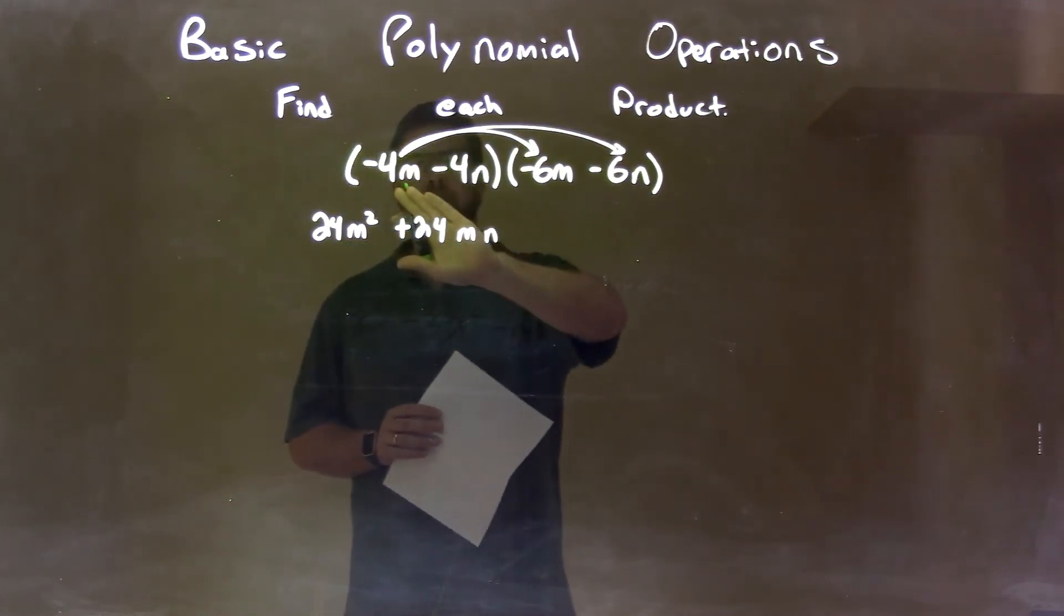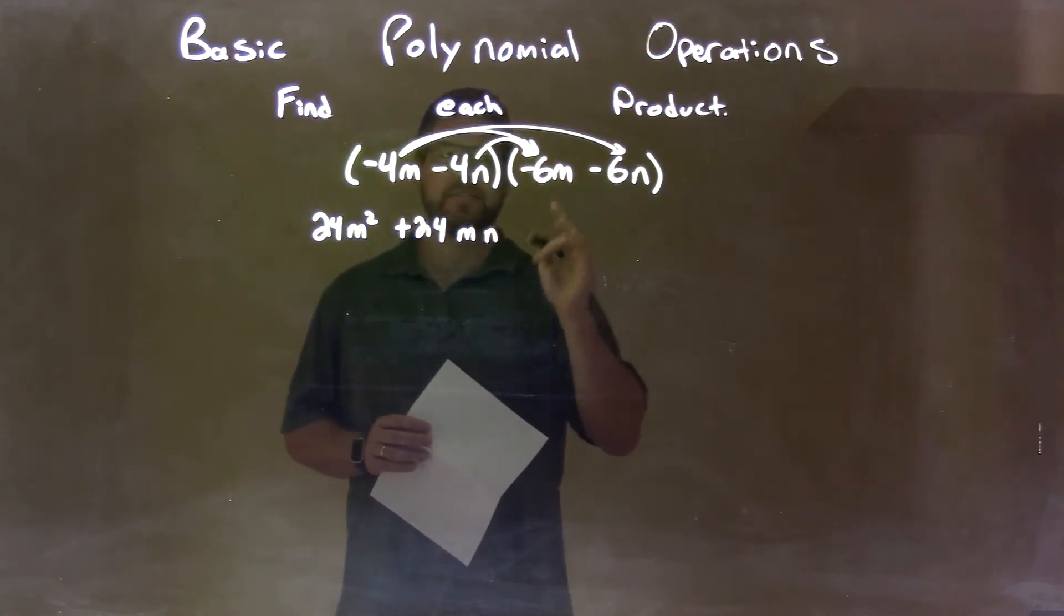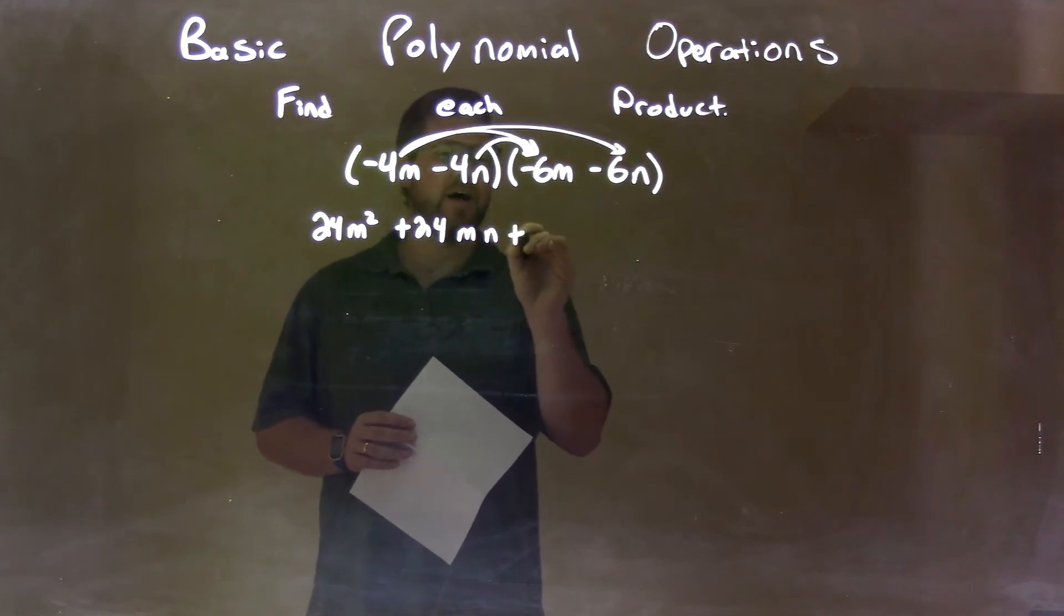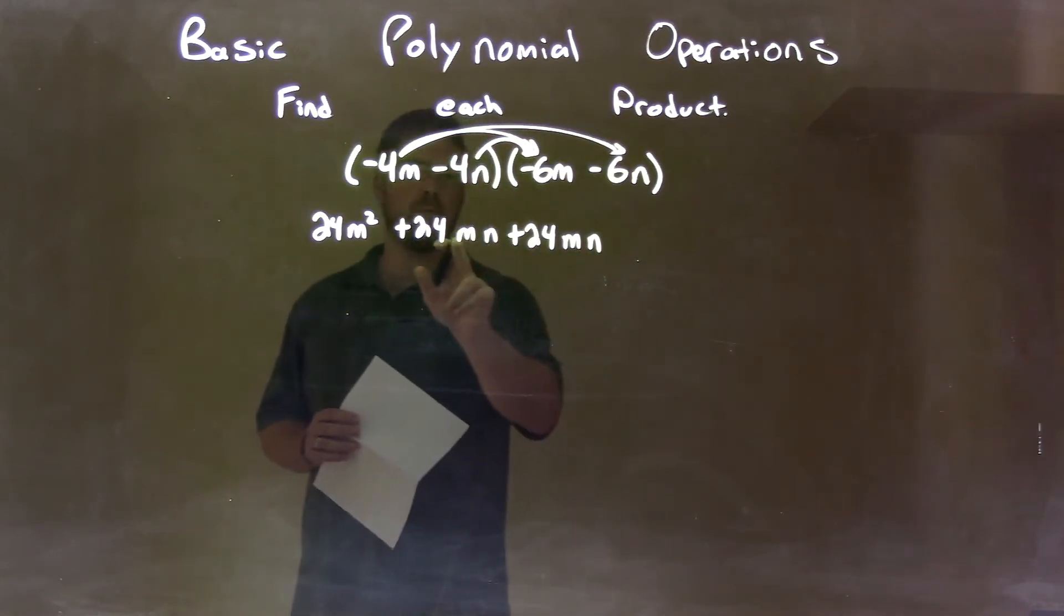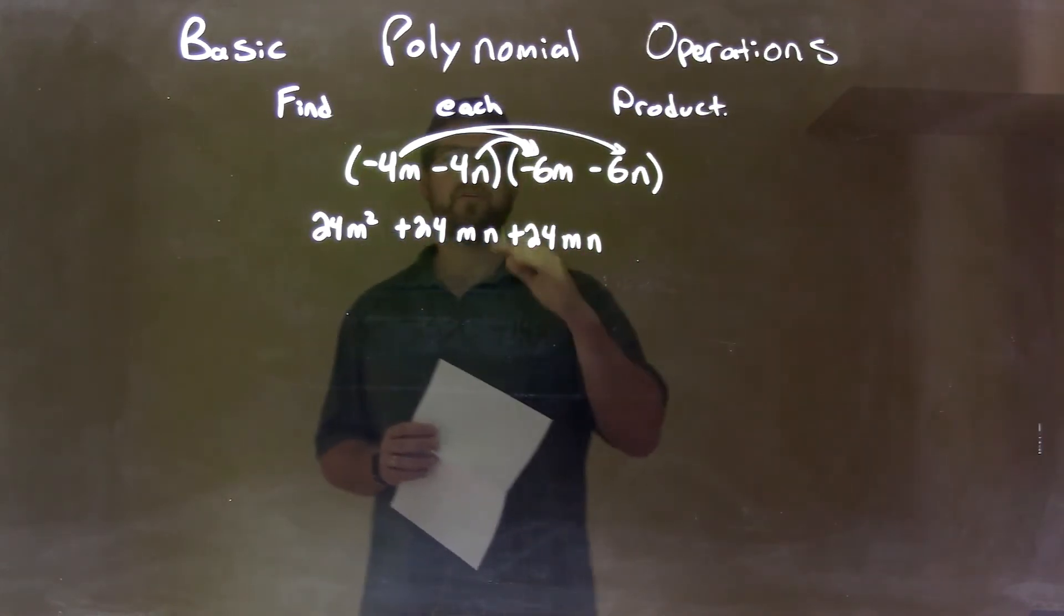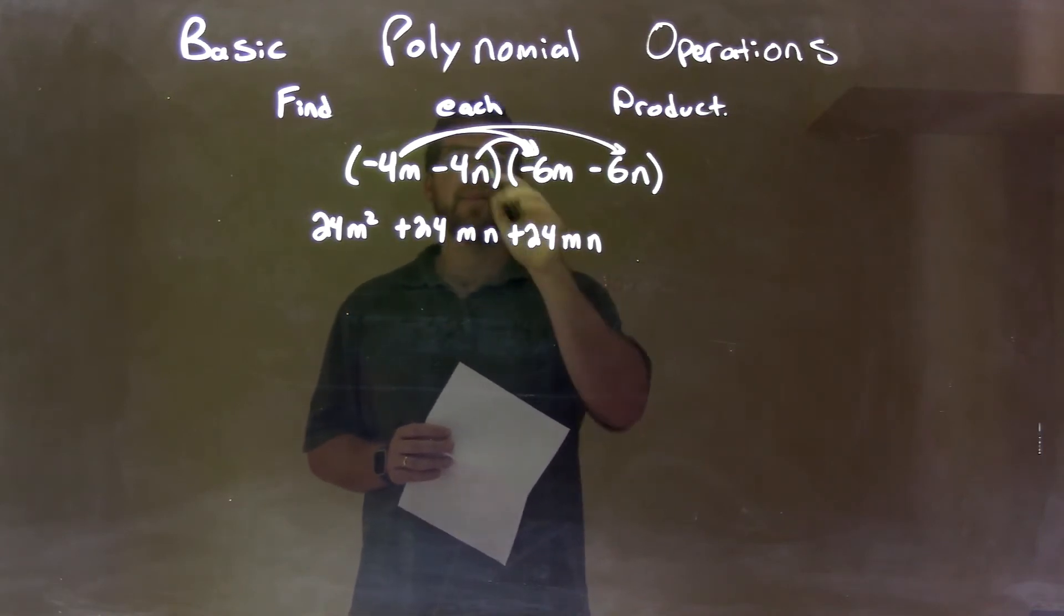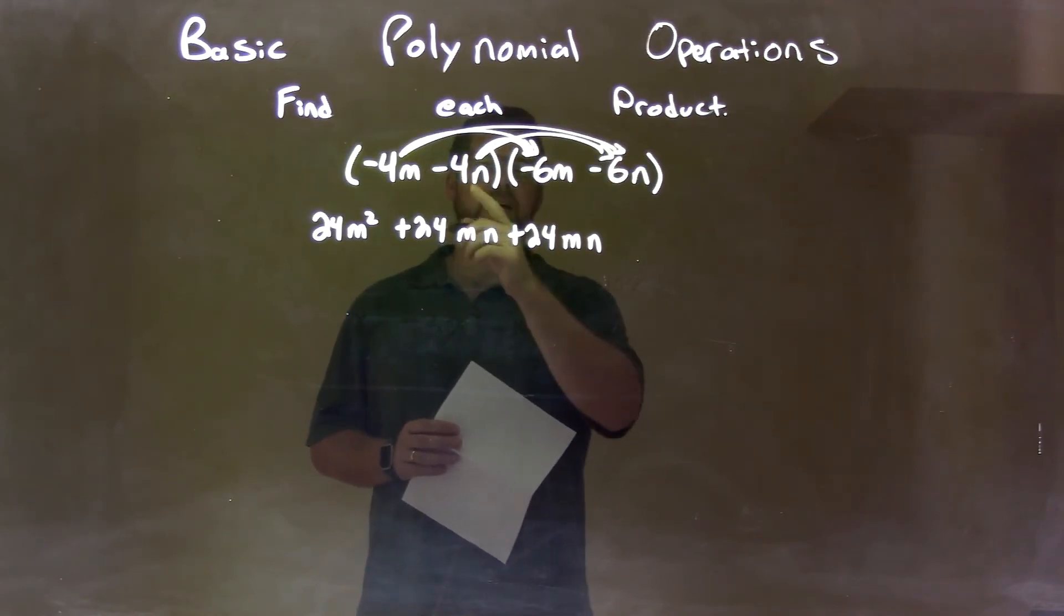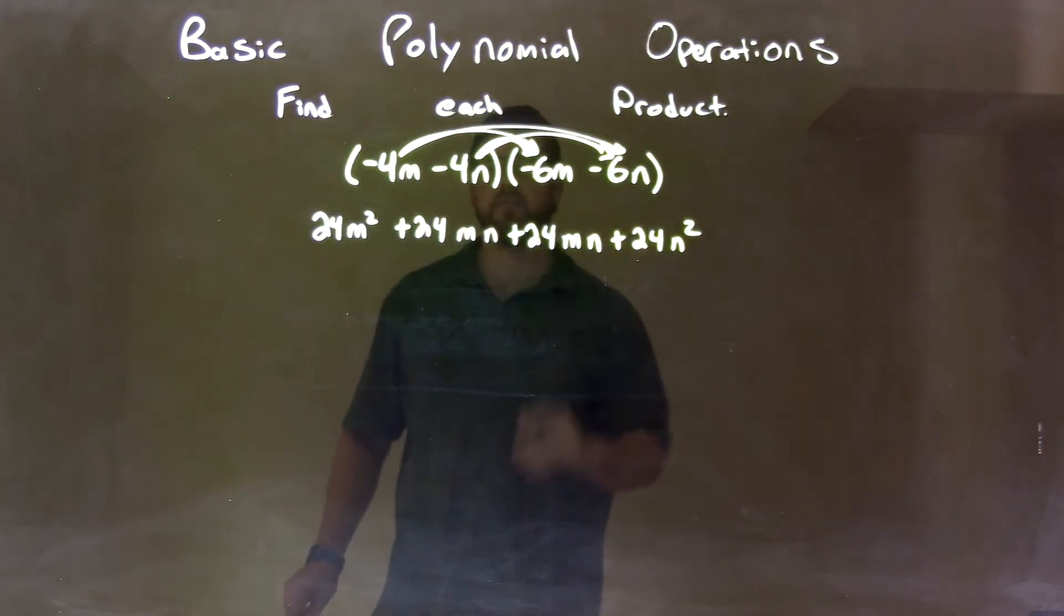Then I finish with my negative 4m. Multiply now the negative 4n. Negative 4n times negative 6m is positive 24mn. I'm going to keep the same order as before because it really doesn't matter if it's n times m or m times n. Negative 4n times negative 6n is positive 24n squared, because both of them have the variable n.